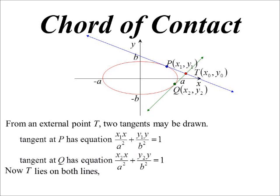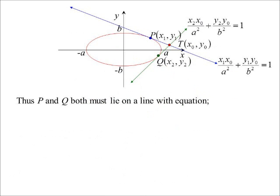We know the point T lies on both of those tangents. So therefore, it must satisfy both of those equations. So if I substitute x0, y0 into both of the equations, they must be true statements. So they now are both statements of fact. We know those things to be true. Now, therefore, P and Q must lie on a line with an equation like so. And there's your chord of contact.